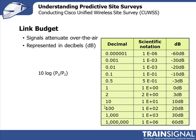10 dB gain, 10 times the power. So this table can be a useful reference for you. And if you're going out onto a site survey, the reason why I always take a calculator with me is because you have to calculate occasionally going from milliwatts to decibels or decibels to milliwatts. I personally find it easier just to take a calculator with me and just calculate it.